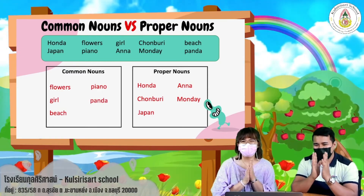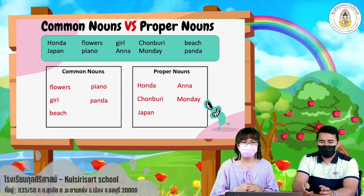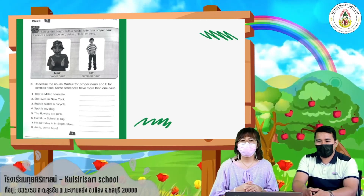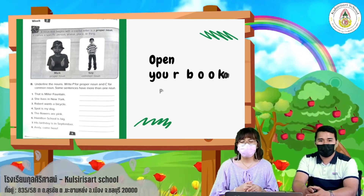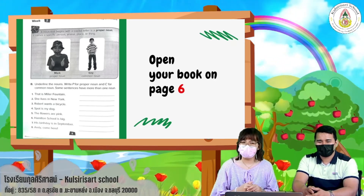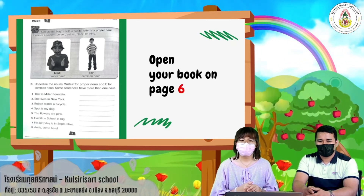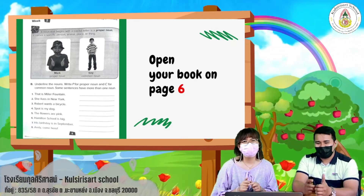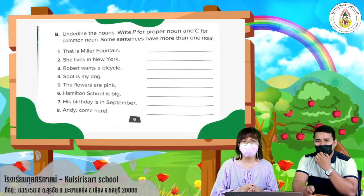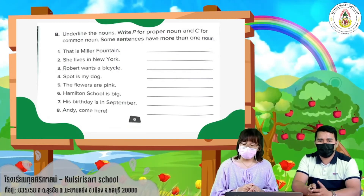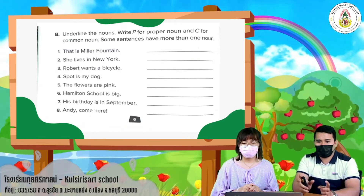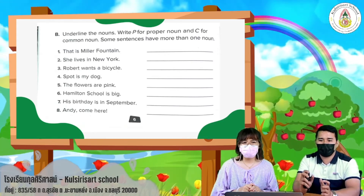Very good! Now I want you to get your book and open it on page 6. Let's answer the activity. The instruction says: underline the nouns, write P for proper noun, and C for common noun.